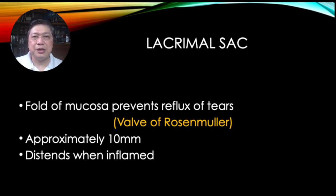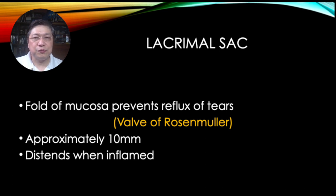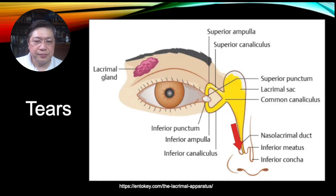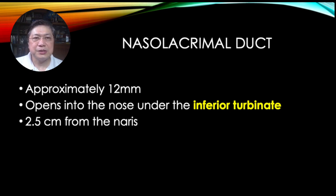The lacrimal sac is approximately 10 millimeters and distends when inflamed. It's a useful feature that guides you: when there is inflammation in the lacrimal sac, it's well protected by the body, but when distended, the entire area goes up and you can see a bump in that area. From the sac, it goes into the nasolacrimal duct, which is about 12 millimeters long. It opens in the nose at the inferior turbinate, about 2.5 centimeters from the tip of your nostrils.